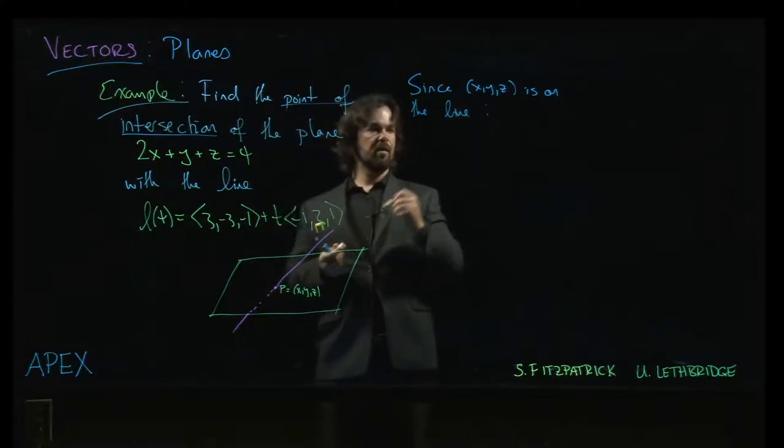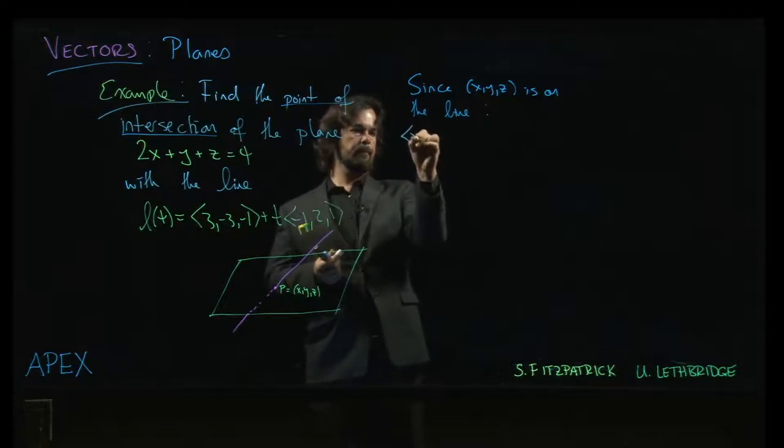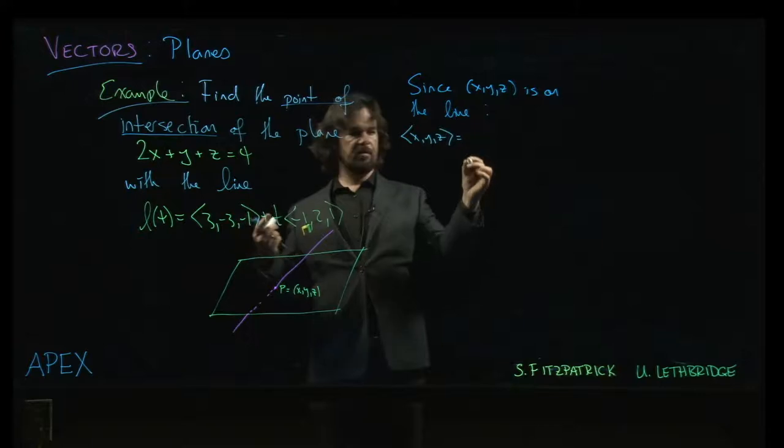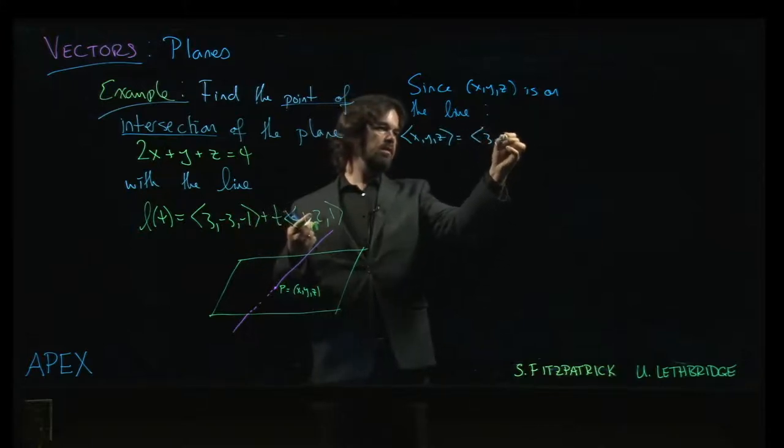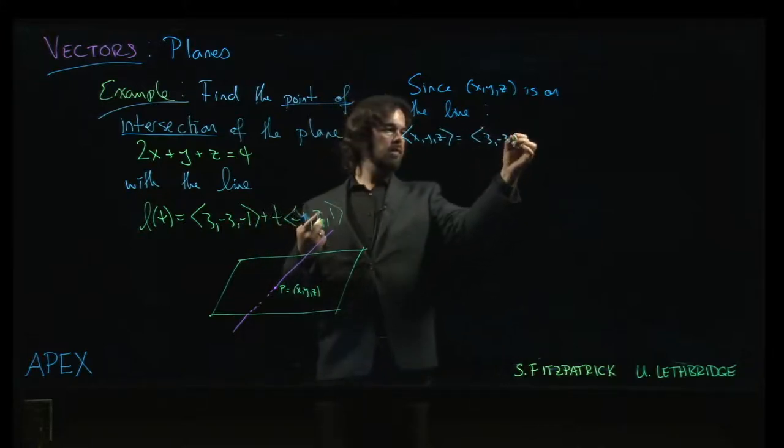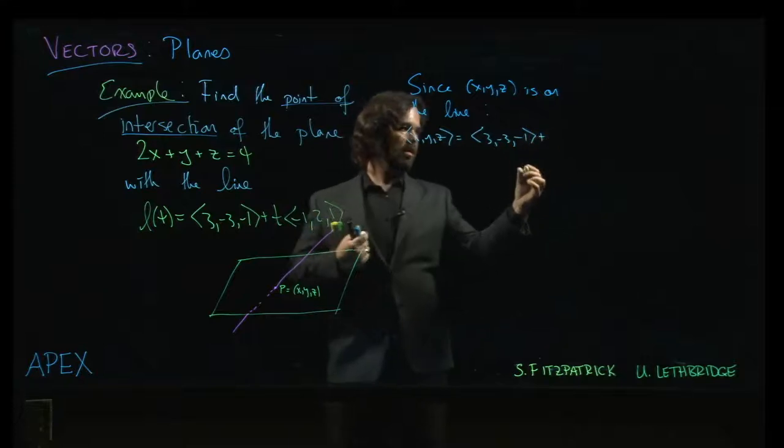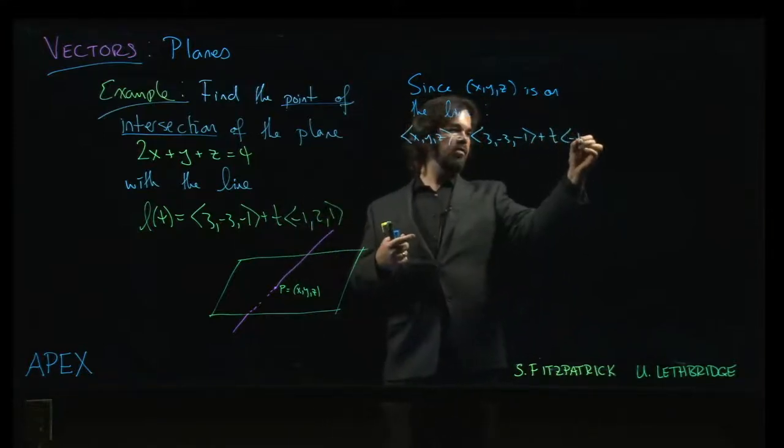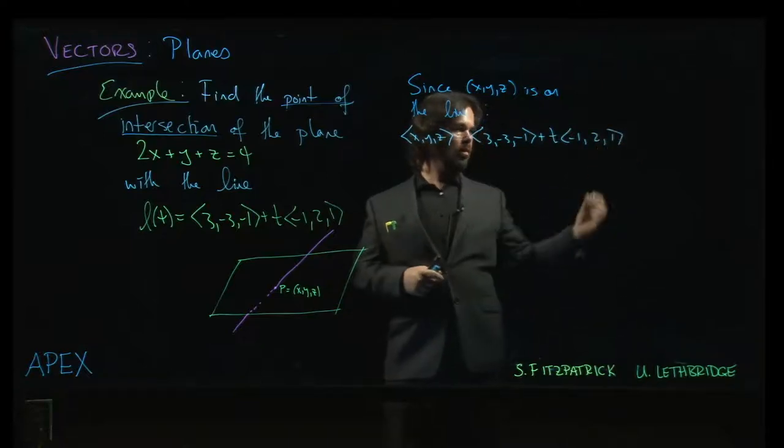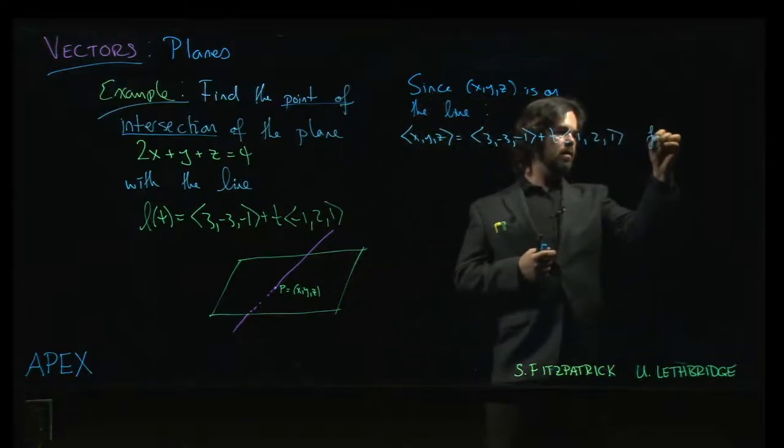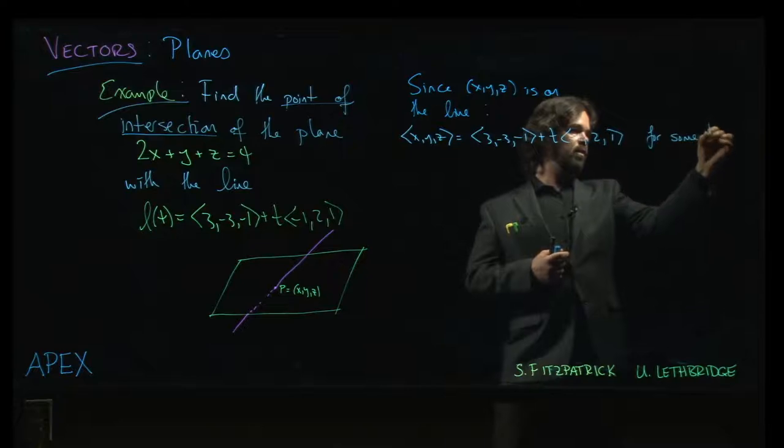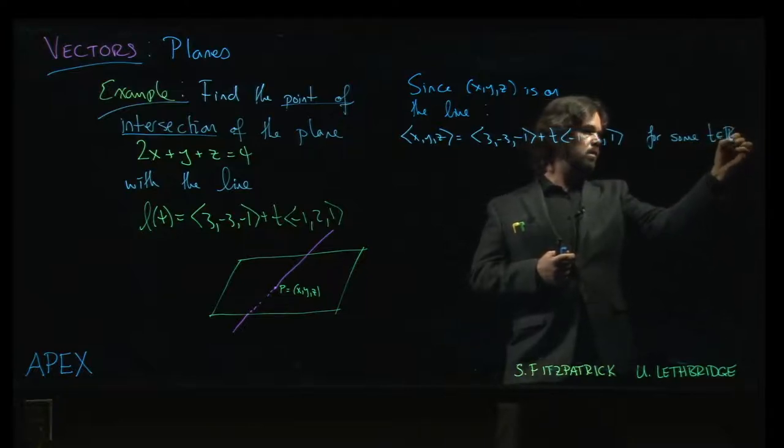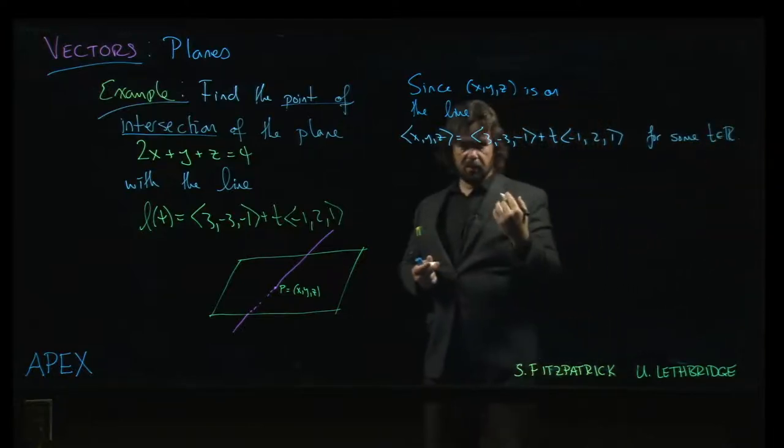That tells us that x, y, z is (3, -3, -1) plus t times (-1, 2, 1), you know, for some real number t. That's what it means to be a point on the line.